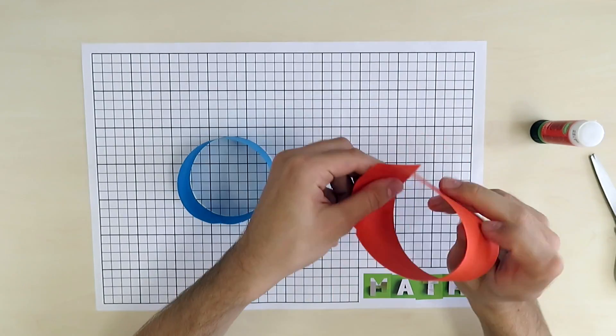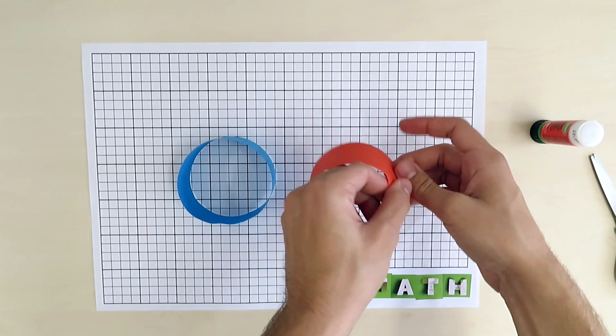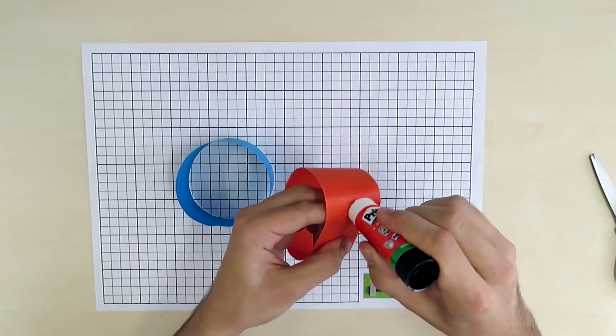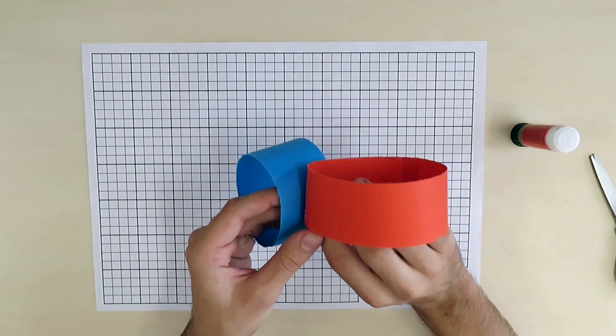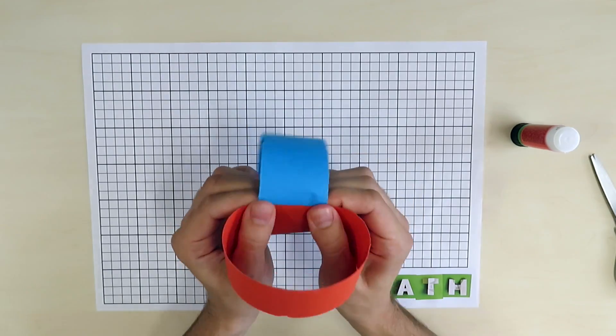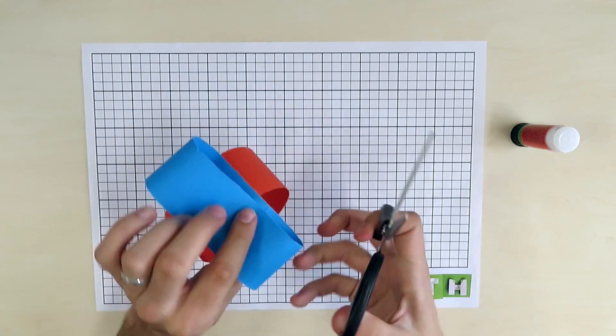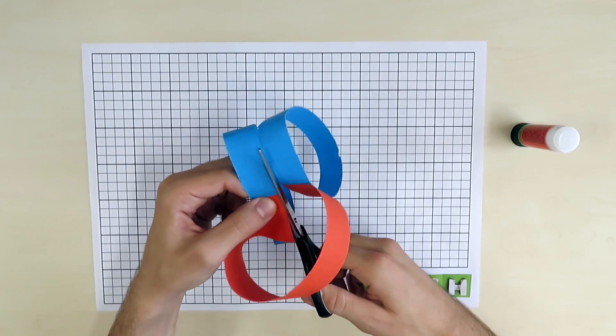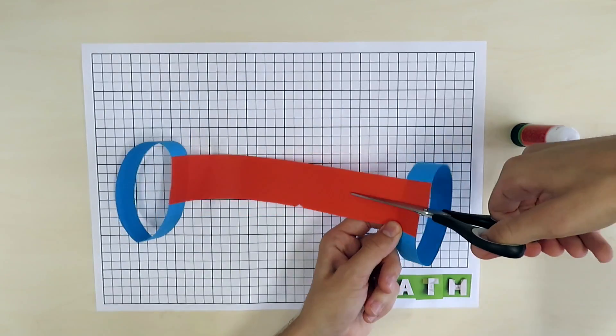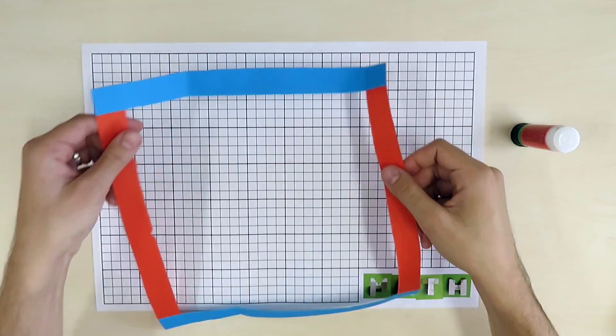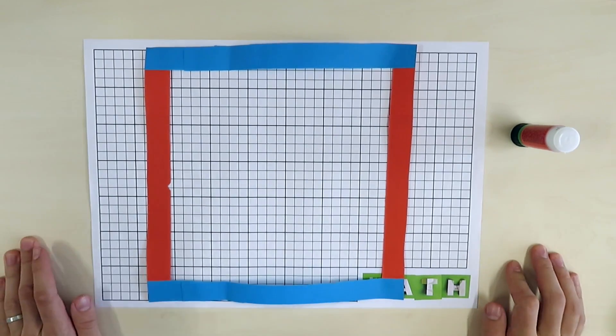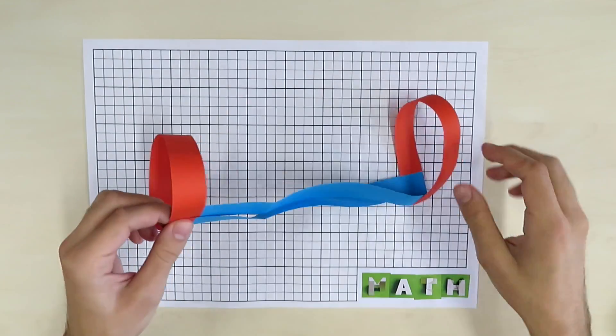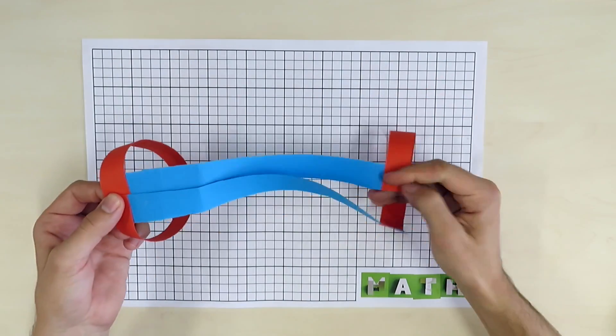It gets really interesting when we take two loops and stick them together. First, let's take two simple zero twist loops and stick them together at 90 degrees and cut them. And we get a square, which is quite surprising for most of the students. We can try to reconstruct it back to see how a square can be a result of cutting two cylindrical loops.